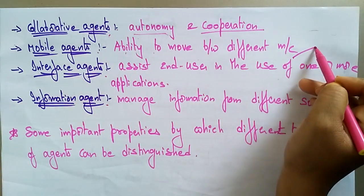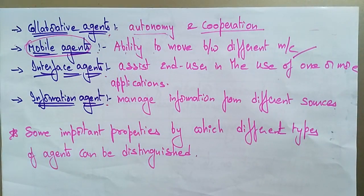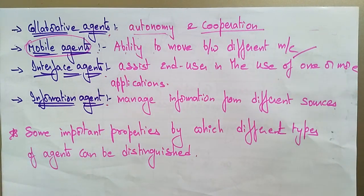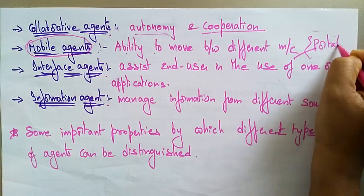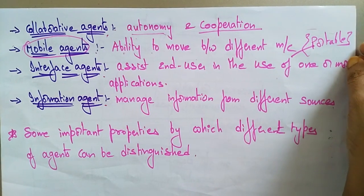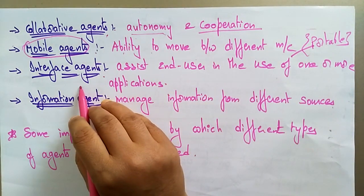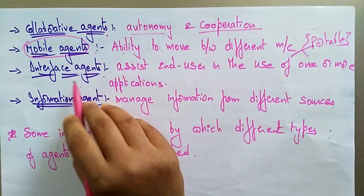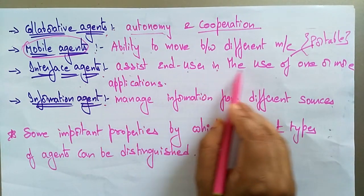Mobile agents have the ability to move between different machines. With the help of a mobile agent, the code and software can be migrated — it is portable by default. So the defining feature of mobile agents is the ability to move between different machines.